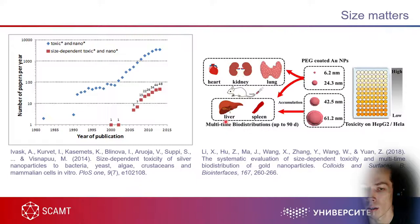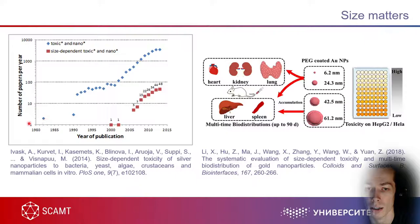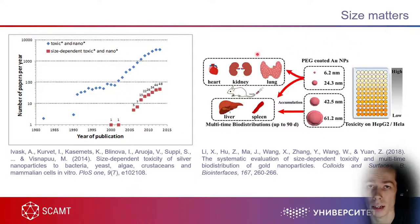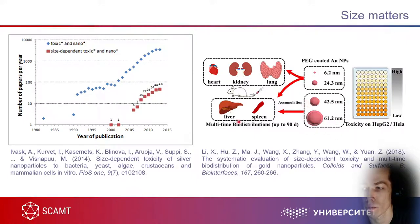There were no publications about size-dependent toxicity until about 20 years ago, even though the history of nanoparticle study is over 100 years. Now there are a lot of papers on size-dependent toxicity. Size also matters for bio-distribution: depending on size, nanoparticles can penetrate different organs. If small enough, they accumulate in kidneys or heart or lungs; if big enough, they accumulate in liver and spleen.